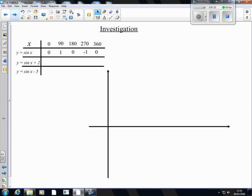A wee investigation here, again looking at x and sin x. We're now going to look at sin x plus 2. So for this one here, we're going to have the values for sin x and all we're going to do is add 2 to them. So 0 add 2 is 2, 1 add 2 is 3, minus 1 add 2 is 1, and 0 add 2 is 2.